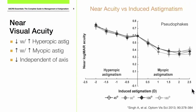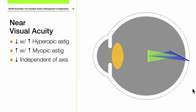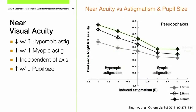What about near visual acuity? If we increase hyperopic astigmatism, we're going to decrease near visual acuity. But interestingly, if we increase myopic astigmatism, we actually see a little bit of a benefit in near visual acuity. Why? Because of the conoid of Sturm — as we bring our object of regard closer to the eye, we're able to take advantage of that conoid of Sturm and actually maintain some visual acuity through that transition.